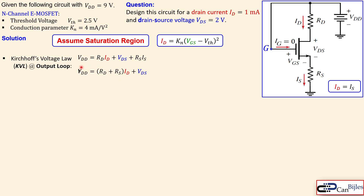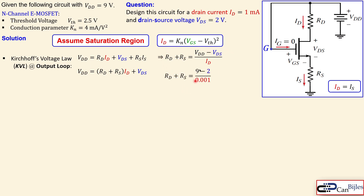We know we require one milliamp and two volts VDS, and we know VDD. Writing an expression for the combined resistors: RD plus RS equals (VDD minus VDS) divided by ID. Substituting values — nine minus two over one milliamp — gives seven kilo-ohms. But that is just the sum; we need the individual values, so we need another equation.